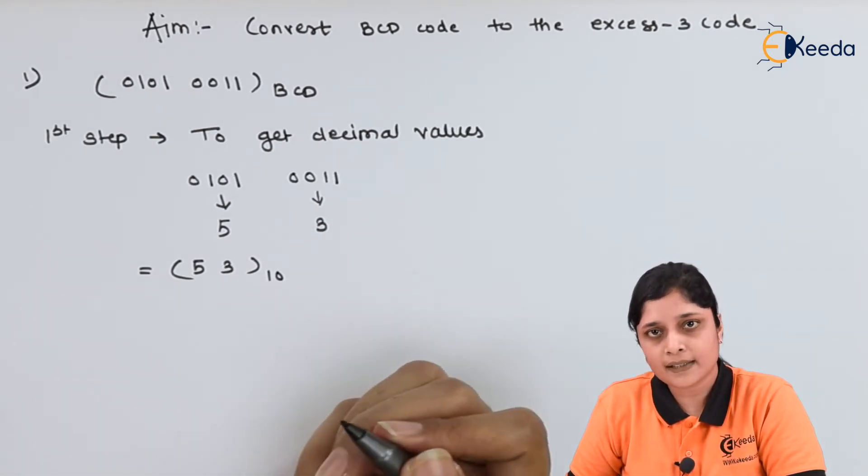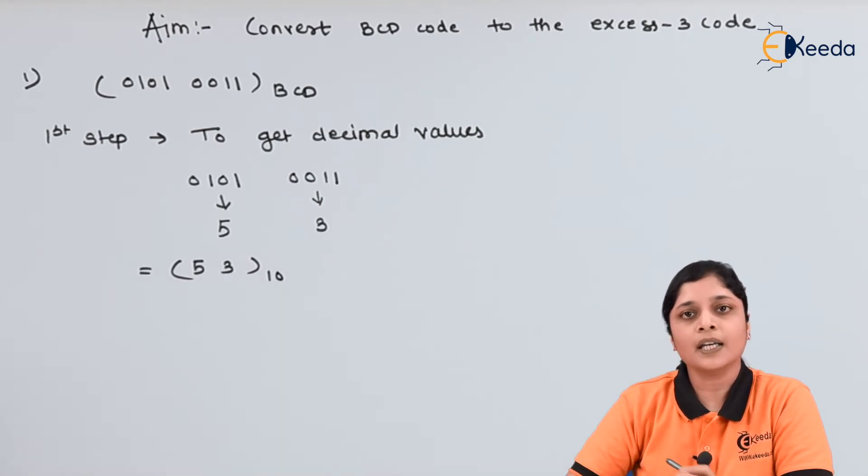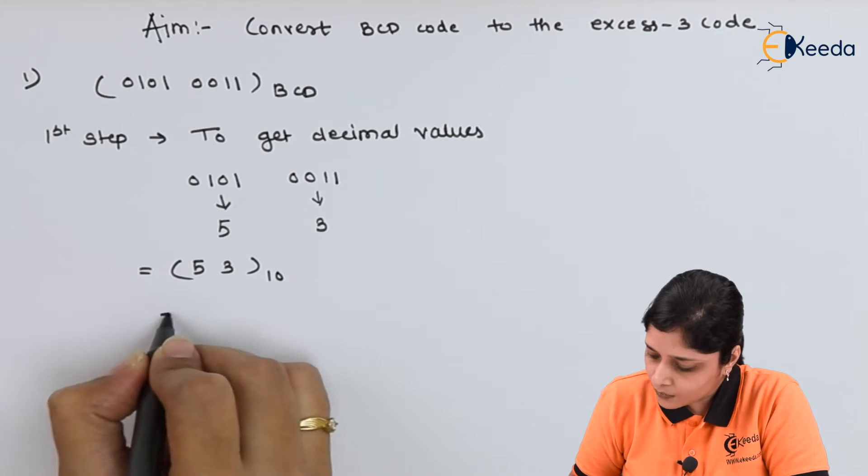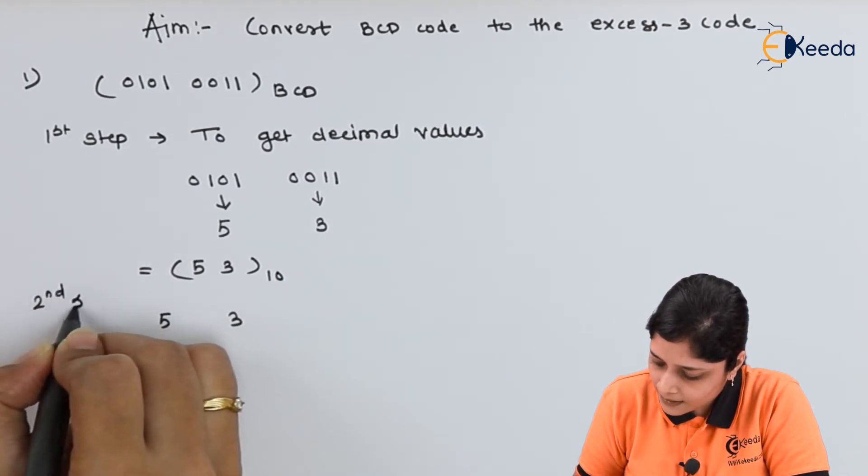Now for getting the XS3, you have to add plus 3. Now again you have to add plus 3 in each separate decimal digit. How? Write down 5 3 separately. Second step,